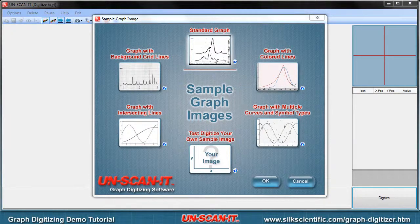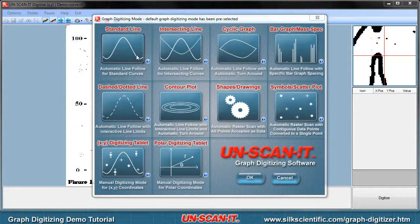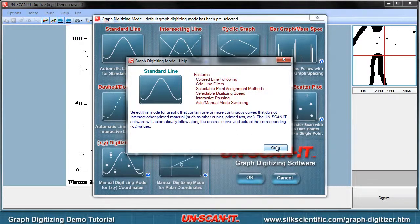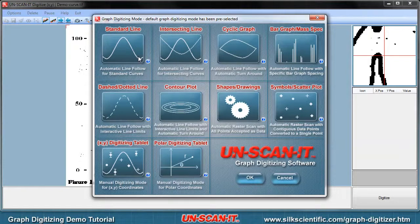For this tutorial, we will digitize the standard graph sample image. There are multiple graph digitizing modes available including standard lines, intersecting lines, dashed dotted lines, and a manual digitizing mode. These modes are explained further by clicking the question mark button associated with each mode. For this sample image, we will choose the standard line mode for automatic digitizing.